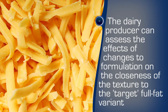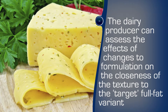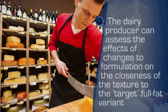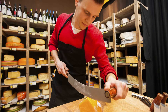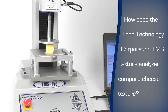What factors affect richness and by how much? Is richness measurable? And so can it be controlled? The FTC Texture Analyzer can test cheese for richness and directly compare a reduced fat formulation to a target full fat variety.